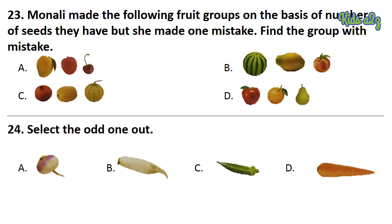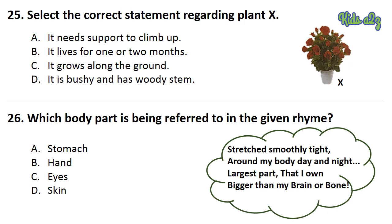Question 23: Munali made the following fruit groups on the basis of number of seeds they have, but she made one mistake. Find the group with the mistake. The answer is Option B. Question 24: Select the odd one out. The answer is Option C. Question 25: Select the correct statement regarding plant X. The answer is Option D — it is bushy and has a woody stem.